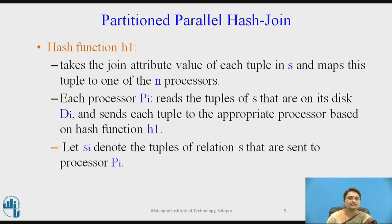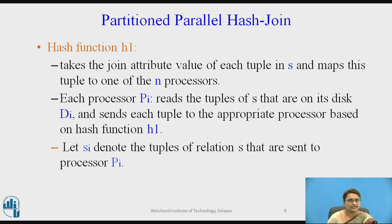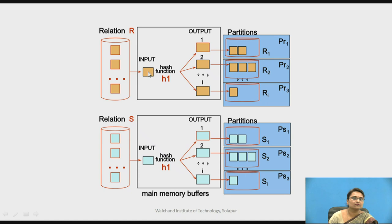Hash function h1 takes the join attribute value of each tuple of s and maps it among the n processors. Each processor pi reads the tuples of s and, based on the hash condition, sends them to disk di where they match. The portion of s sent to processor pi through disk di is denoted si. Relation r is similarly hashed and partitioned through the corresponding partitions, then repartitioned further.